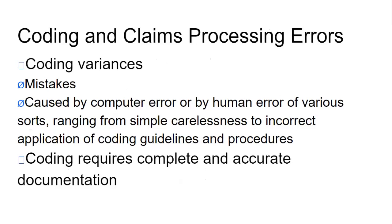Coding and claims processing errors: what can be some errors? Coding variances — mistakes caused by computer error or human error of various sorts, ranging from simple carelessness to incorrect application of coding guidelines and procedures. Coding requires complete and accurate documentation.